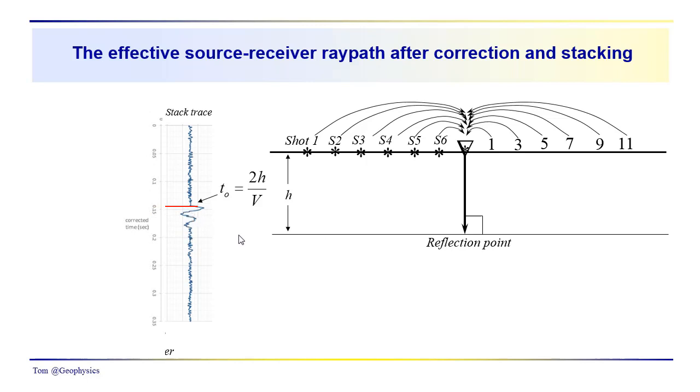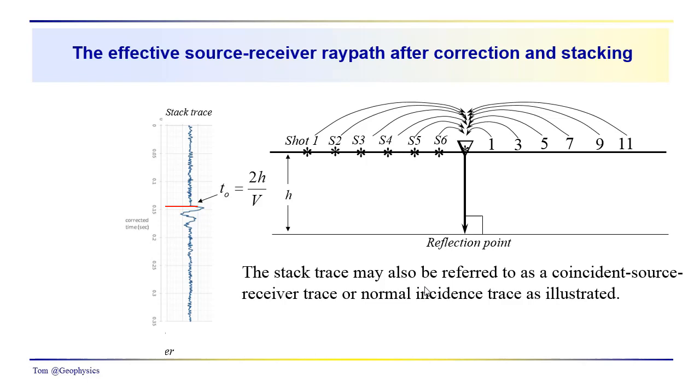This would be our single stack trace compiled from these six source receiver combinations after NMO correction and stacking, summing all together. It would be this event that comes in at the vertical up and down time here, or the normal incidence travel time.